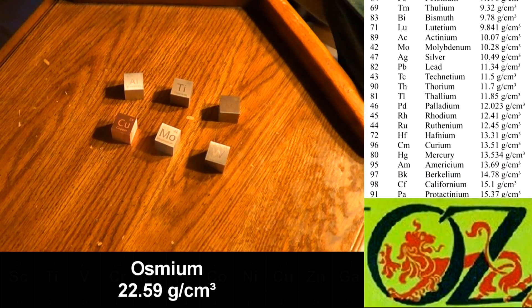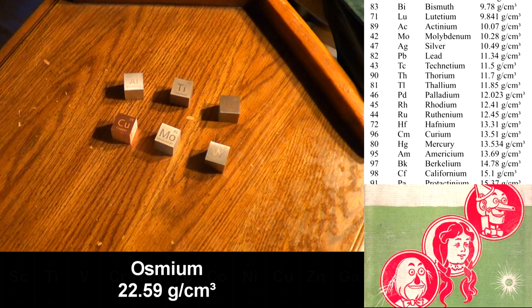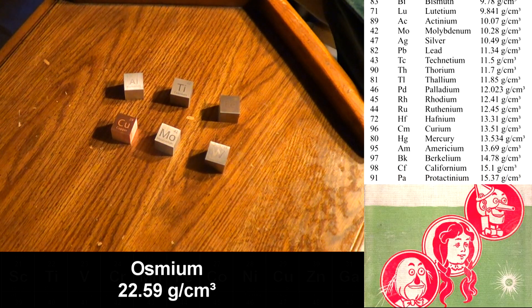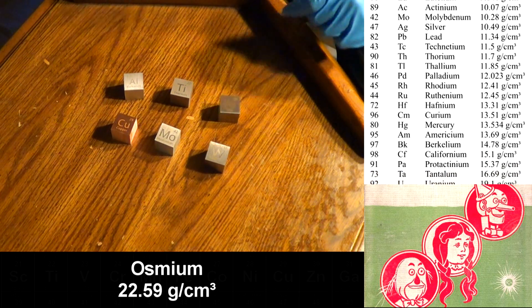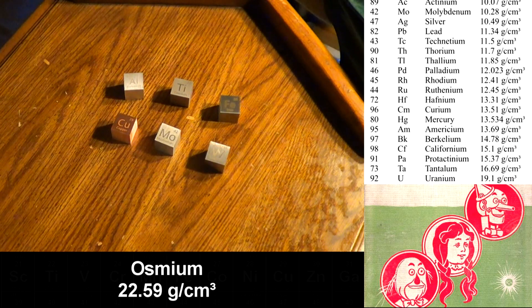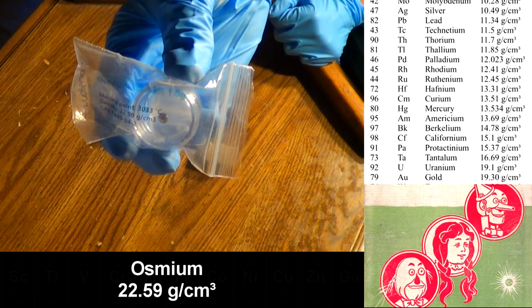The next one up is osmium. You might think that Dorothy found it over the rainbow, and it's possible because it's very rare and very expensive. So I don't have a cube, but I do have this. It is a one gram sample.